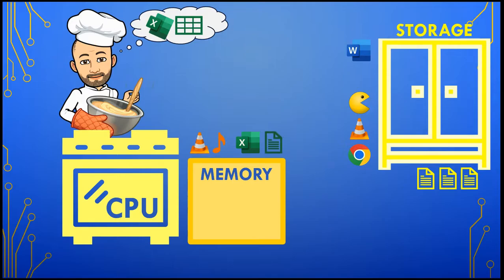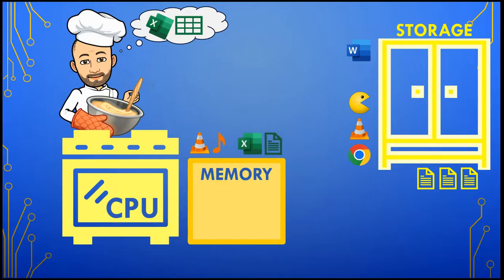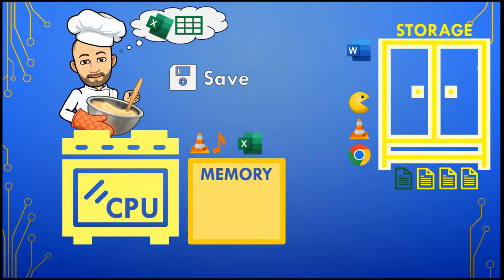The program and files will go back and forth between the CPU and memory while they are being worked on. When you click on that save button, the latest version of the spreadsheet will be placed in storage. And that's how your computer works — very similar to how you work in the kitchen.